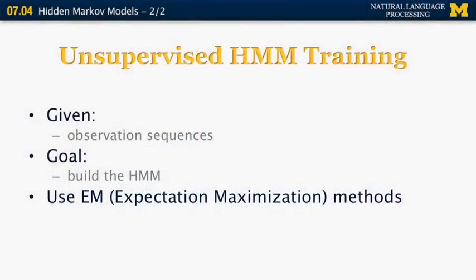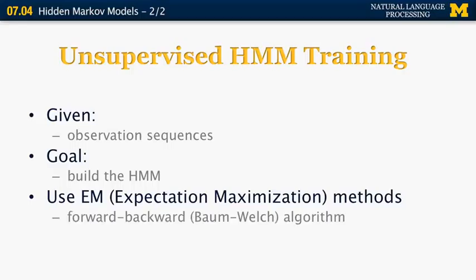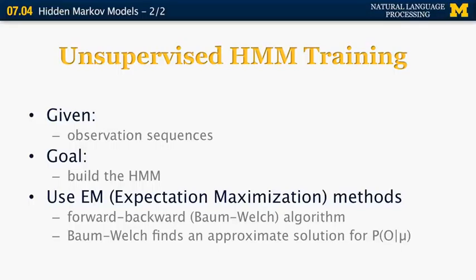A more interesting method is unsupervised HMM training. In this case, we are given a set of observation sequences, and the goal is to build the HMM model consisting of the A, B, and pi matrices. The most general technique for HMM training without supervision is called the EM algorithm — EM stands for expectation maximization. The specific implementation of EM for HMM training is called the Baum-Welch algorithm, or forward-backward algorithm. Baum-Welch is not guaranteed to find an exact solution for the best model that maximizes the probability of the observation given the model, but it often reaches an acceptable solution.